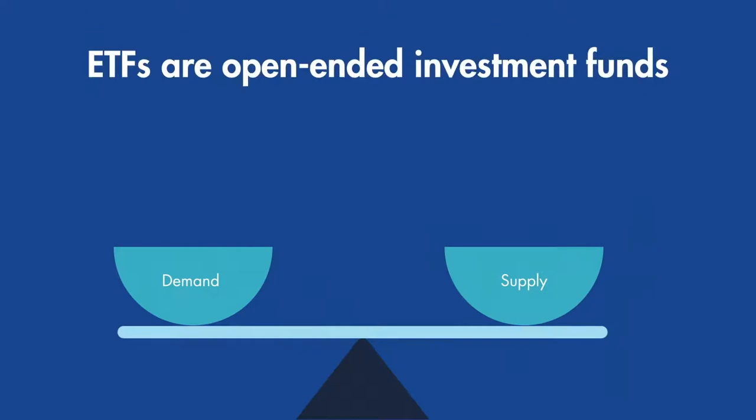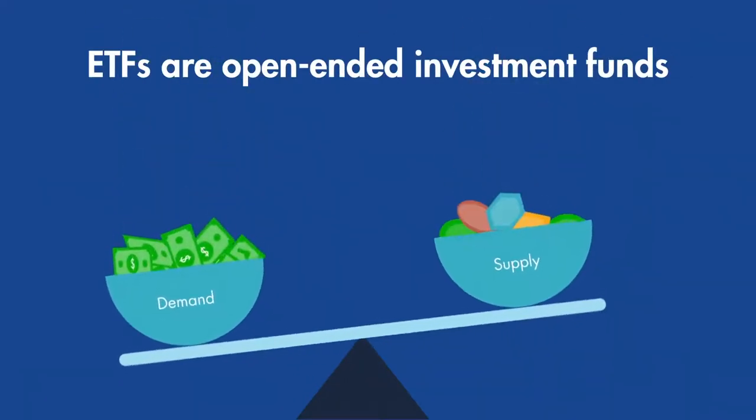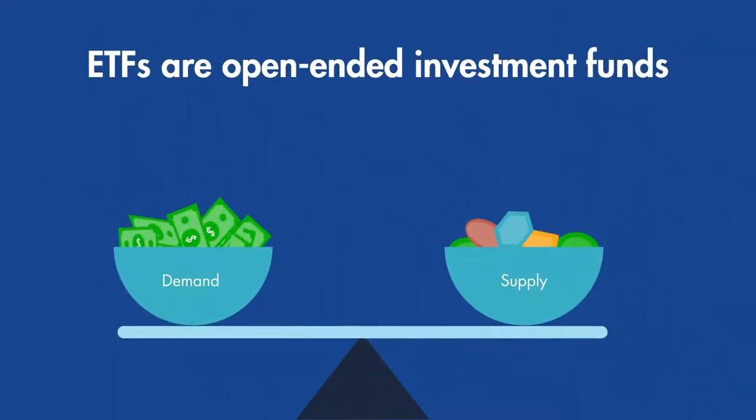ETFs are open-ended investment funds. The number of shares available can fluctuate based on supply and demand through the creations and redemptions process. But how does it work?